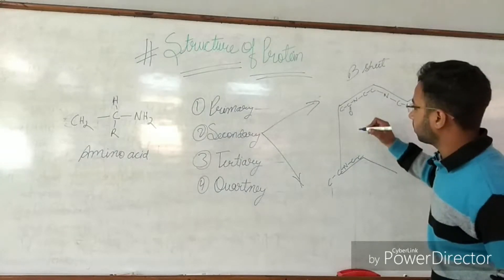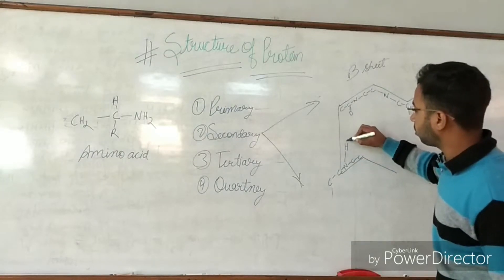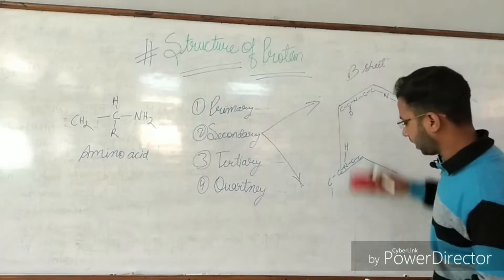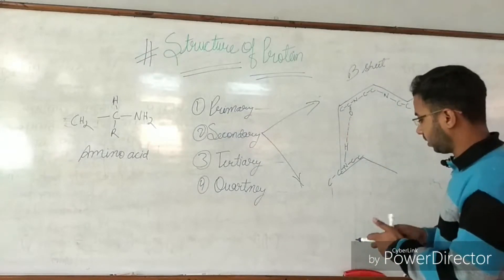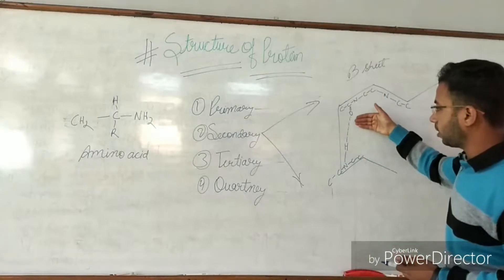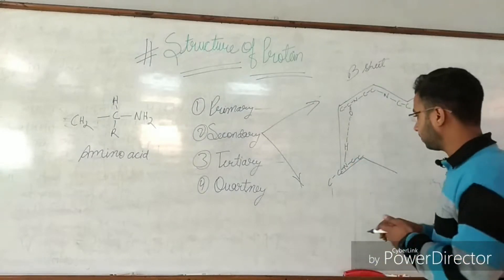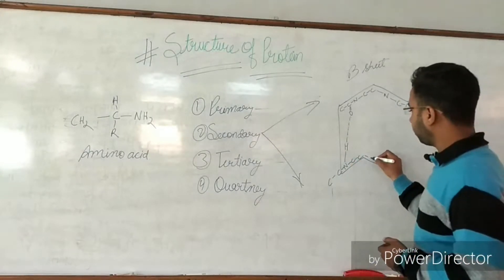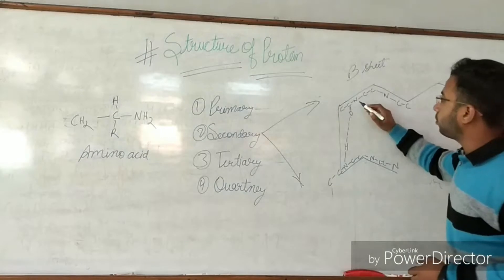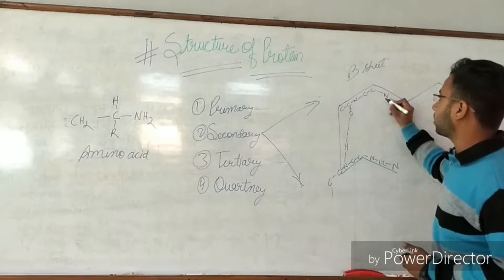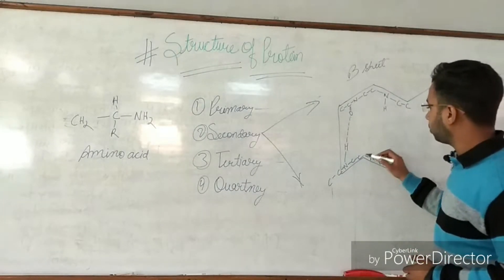In the beta sheet, the carbon contains an oxygen group and nitrogen contains a hydrogen group, so both of them are bonded with hydrogen bonds. We will mark hydrogen bonds in red. The oxygen is connected to carbon and the hydrogen is connected to nitrogen. This pattern continues, and after leaving one, two, or three units, we connect another hydrogen bond pair.